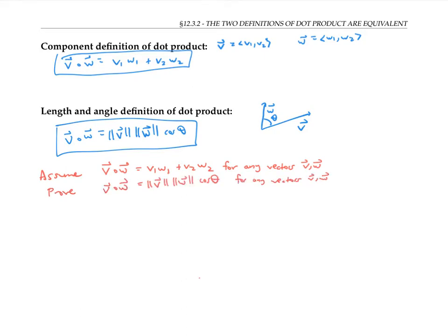This will show that the two definitions are equivalent because whatever number I get as my answer for the component definition, I'll get the same answer for the other definition. Although I'm working here with two-dimensional vectors, the argument actually still holds for vectors in three dimensions or n dimensions.